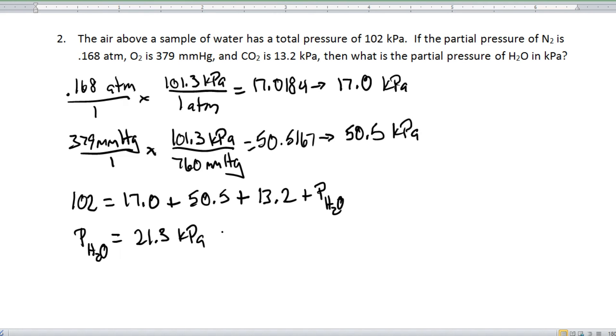Alright, so here are the answers. So the top part here, we're just simply converting these two values into kilopascals, just like we did in the previous question. The only thing that makes this one slightly different is that this time I actually gave you the total pressure, so that's the 1, 0, 2, and then you're actually going to subtract the three values, the three partial pressures, to find whatever's left over. And that is our final answer, the partial pressure of water.